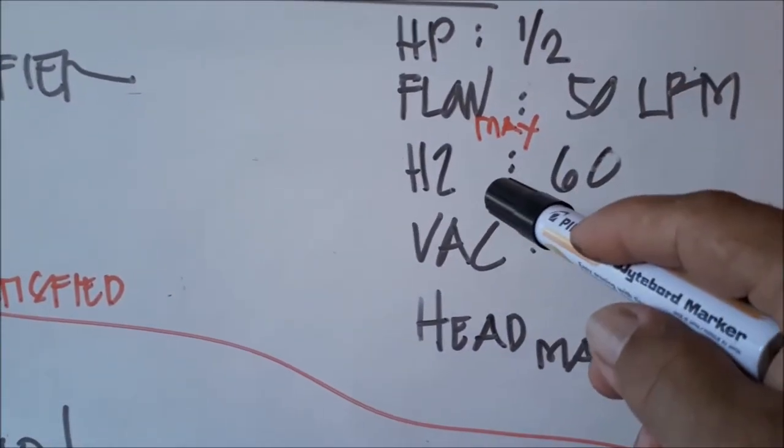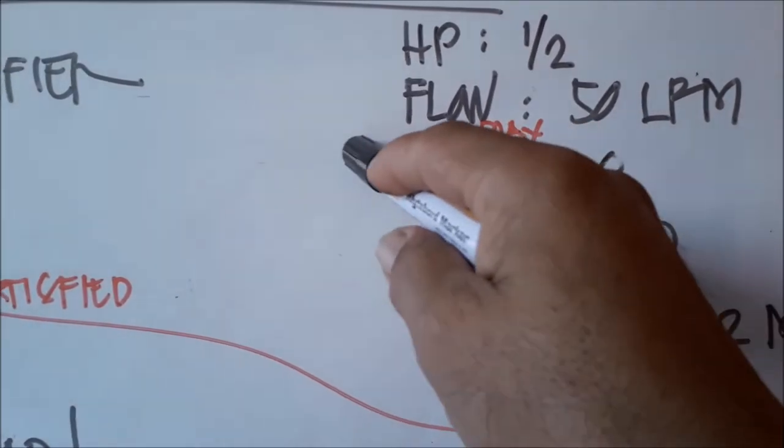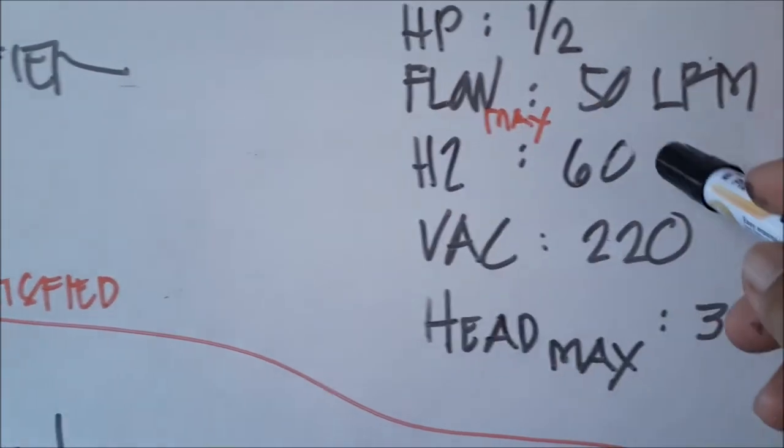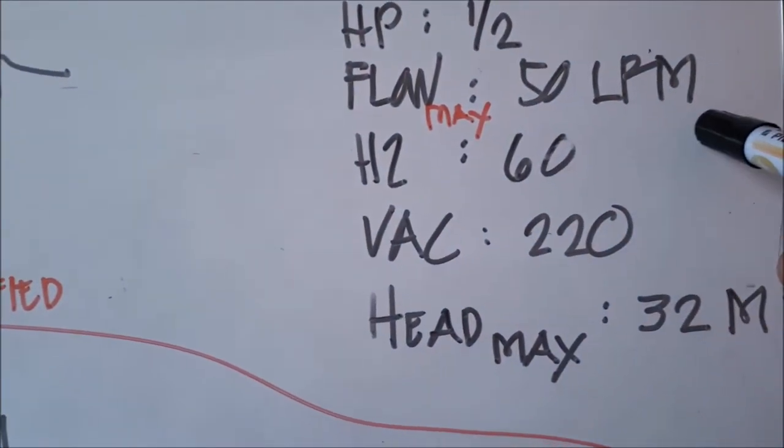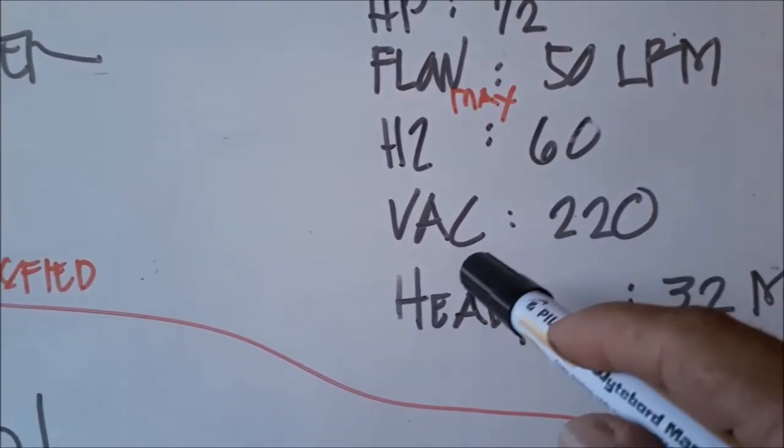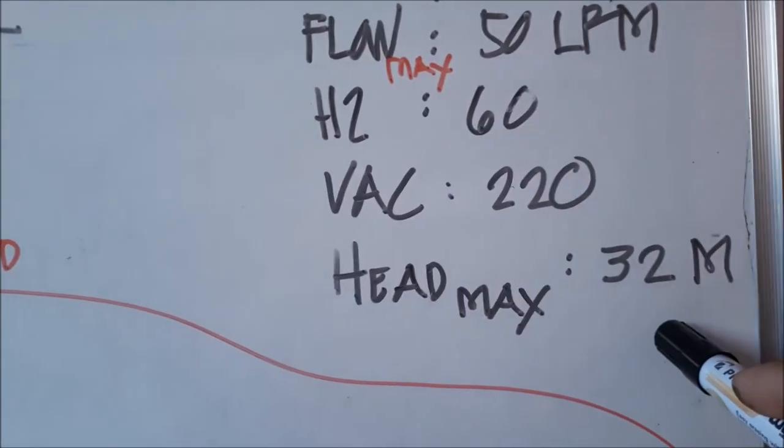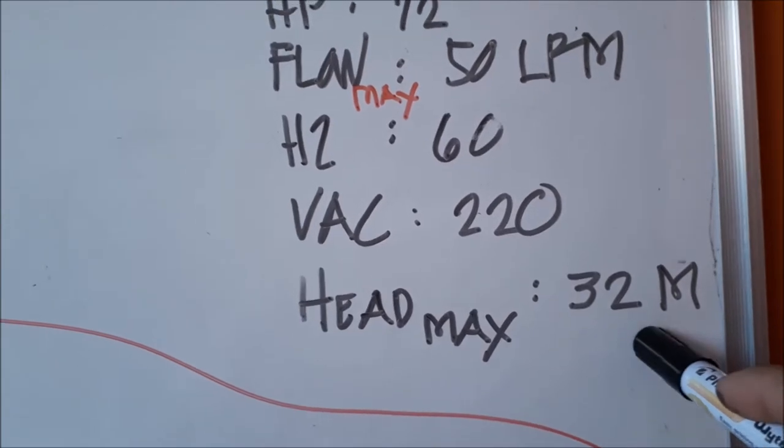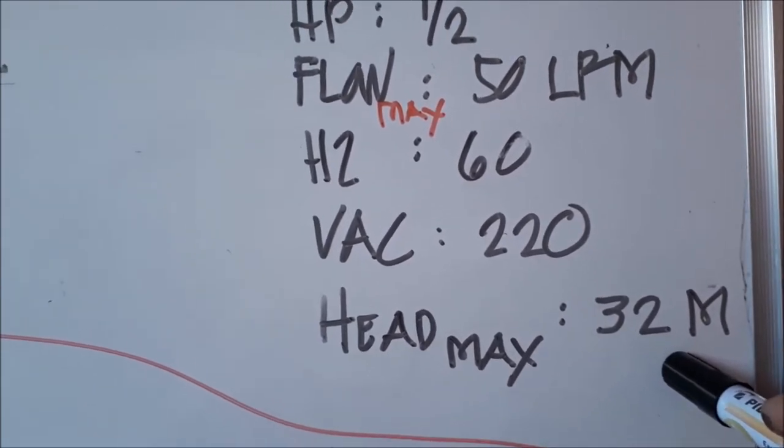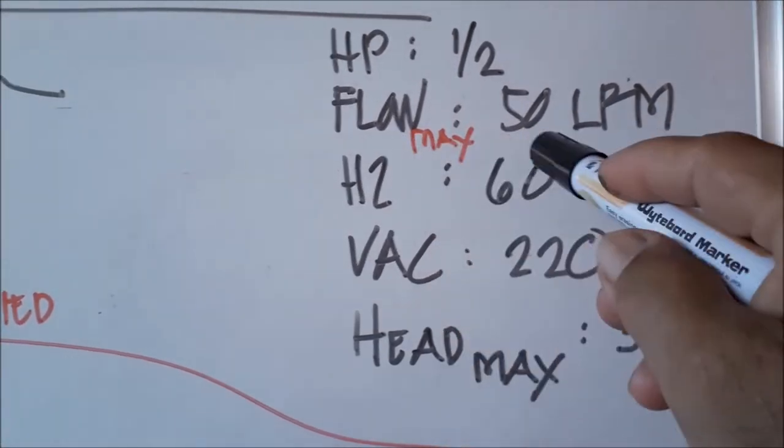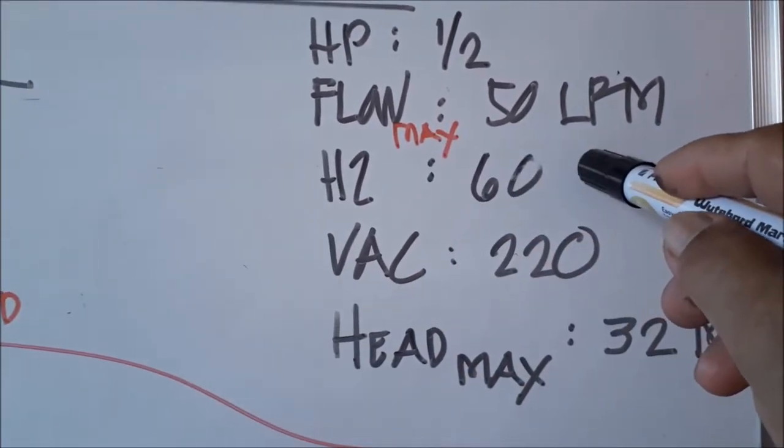The design flow, or maximum flow that it can attain, is 50 liters per minute. Its hertz is 60, voltage is 220, and its maximum head is 32 meters. This means at 32 meter maximum head, its flow at that height is 50 liters per minute maximum.